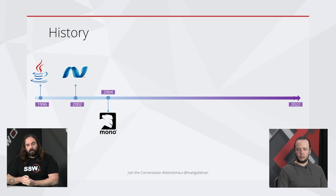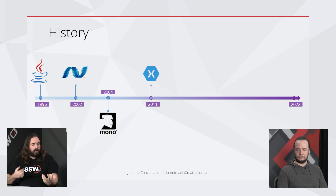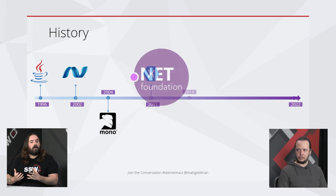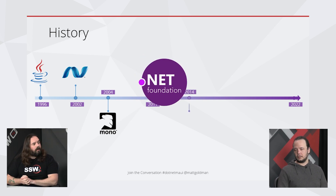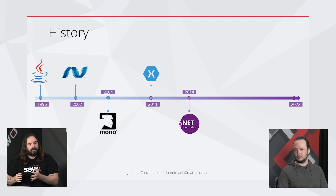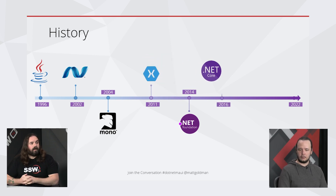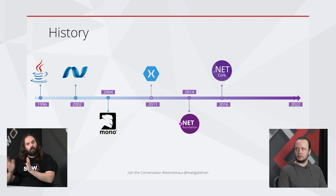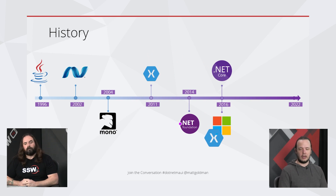MonoTouch and MonoDroid evolved into Xamarin.iOS and Xamarin.Android — .NET runtimes for iOS and Android. On top of that they became an abstraction of the entire platform's APIs in .NET, so everything accessible on Android via Kotlin or Java, and all iOS-specific APIs, were available in .NET with 100% coverage of the native APIs.